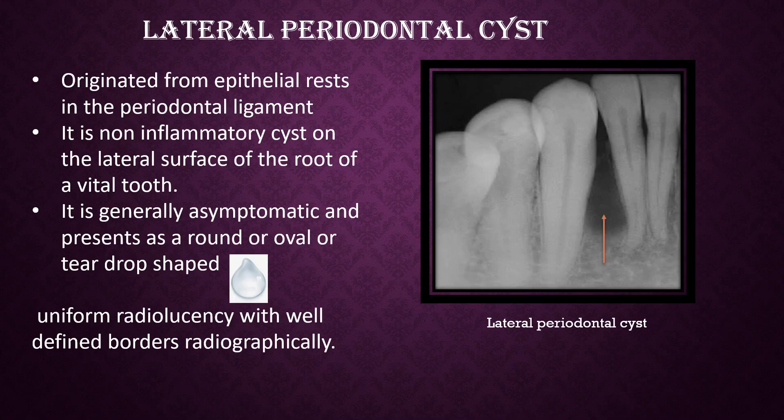What is Lateral Periodontal Cyst? Lateral Periodontal Cyst originates from the epithelial rests in the periodontal ligament. It is a non-inflammatory cyst on the lateral surface of the root of a vital tooth. It is generally asymptomatic and presents as a round, oval, or tear-dropped shape with uniform radiolucency and well-defined borders radiographically.